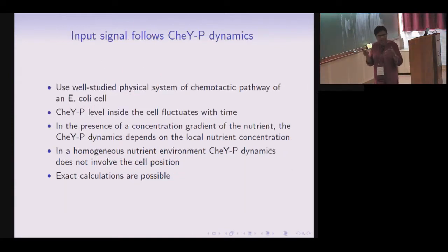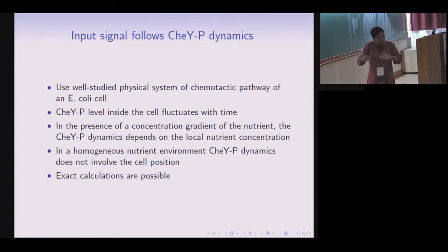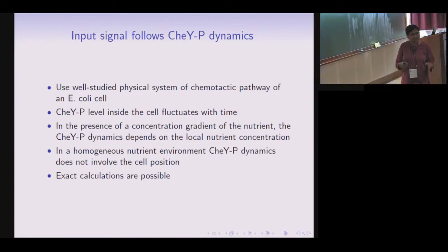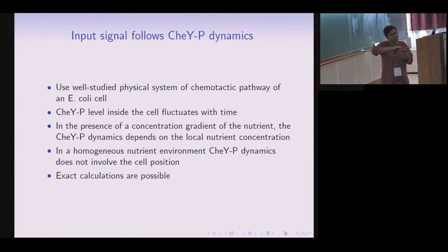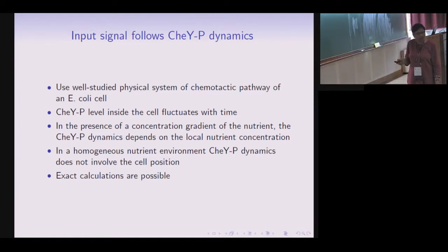Since these questions are motivated by the study of E. coli, we choose the input signal to be the experimentally characterized fluctuations of CheY-P level. The two scenarios correspond to two biological cases: if E. coli is placed in an environment where nutrient shows spatial variation, the CheY-P dynamics depends on the local nutrient concentration and therefore on the current cell position. On the other hand, in a homogeneous nutrient environment CheY-P fluctuates independently, and in that case we can calculate many things exactly.